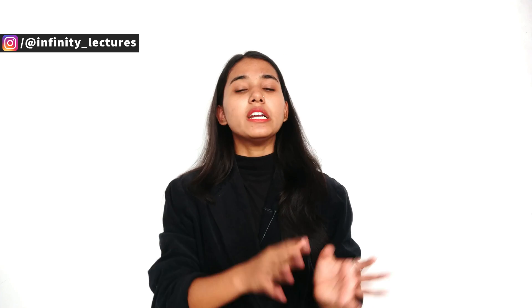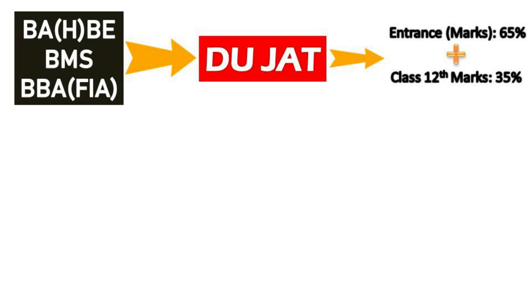Now let's talk about entrance-based admission and which courses are available. A few days ago I made a video on entrance examination courses available in detail, so you can see that video for more clarity. DoJet entrance examination is for three courses: BA Honours in Business Economics, BMS (Bachelor of Management Studies), and BBA Financial Investment Analysis. For admission, entrance examination marks have 65% weightage and class 12 marks have 35% weightage. For the examination pattern about DoJet, other colleges also have courses offered — you will find a separate video on the I button.